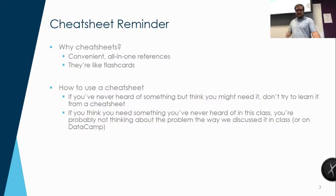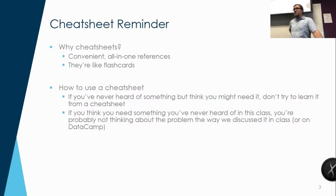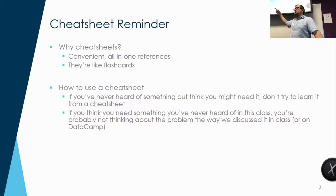Having those cheat sheets handy is going to start becoming more useful because they're going to remind you of the names of functions. Apply in particular is very confusing to people because there's list apply, simplified apply, vapply, et cetera, and they all do slightly different things. Having a cheat sheet where you can look up which one iterates over lists and returns something for every item — that's lapply — is what a cheat sheet does for you. It's just a quick reference.